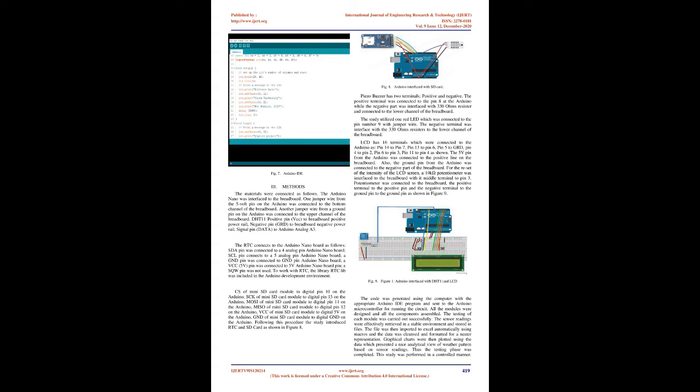Methods: The materials were connected as follows. The Arduino Nano was interfaced to the breadboard. One jumper wire from the 5V pin on the Arduino was connected to the bottom channel of the breadboard, and another jumper wire from a ground pin was connected to the upper channel. DHT11: positive pin (VCC) to breadboard positive power rail, negative pin (GND) to breadboard negative power rail, and signal pin (data) to Arduino analog pin A3.